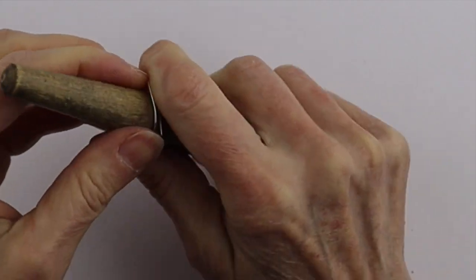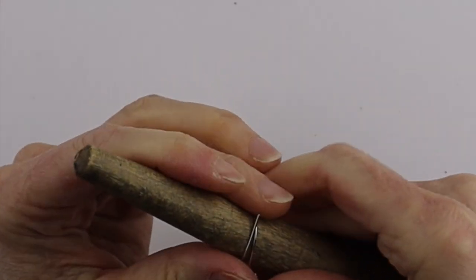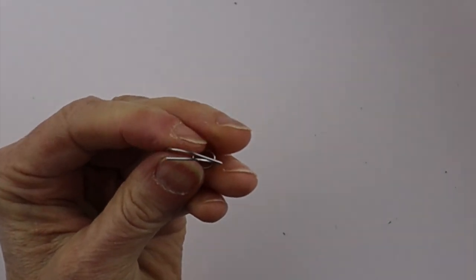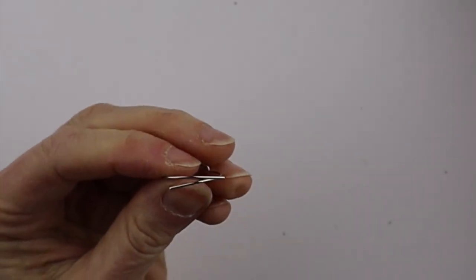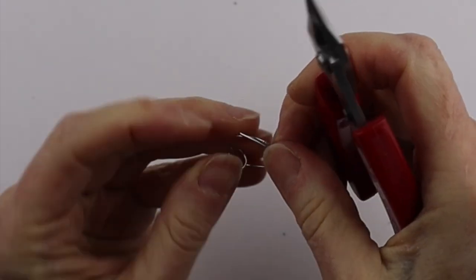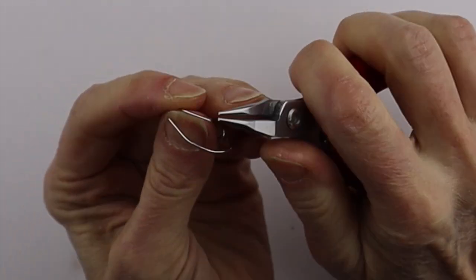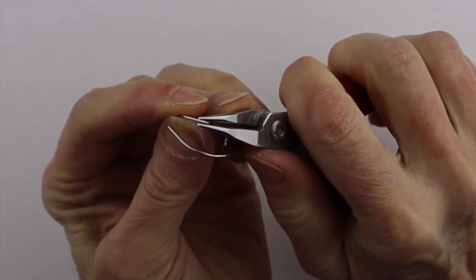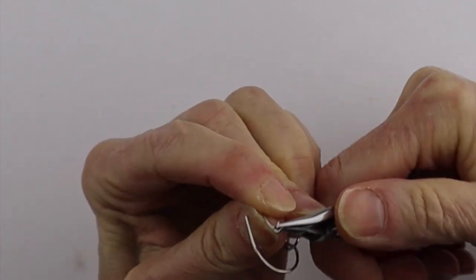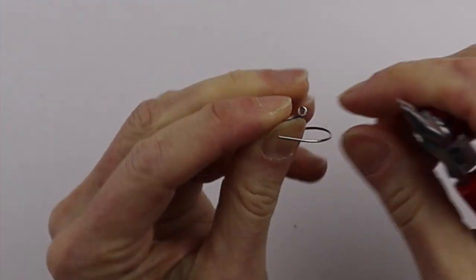Now for the backs, you can just leave them like side by side. Or if you want them more finished, just take your round pliers and twist it around so it's flush.